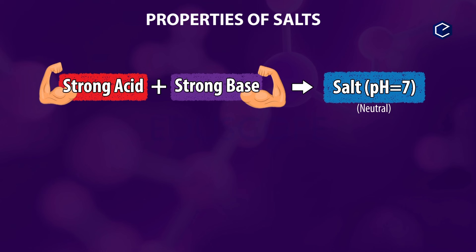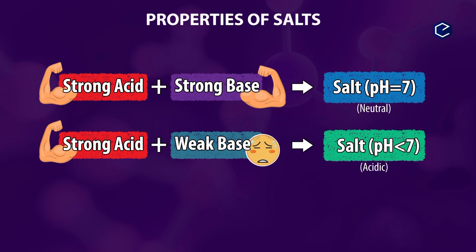Strong acid and weak base together form salts that are acidic in nature, with pH less than 7.